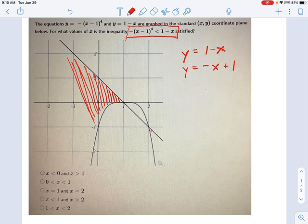But then over here, looks like it's good again, because the curvy one is below the straight one. So now, where is this satisfied? For what values of x is this satisfied?